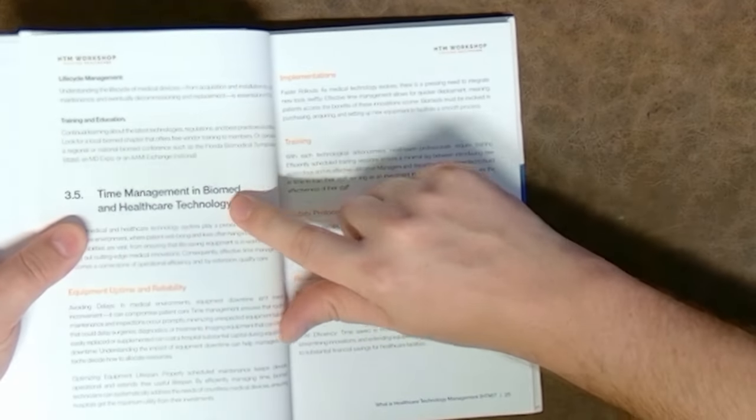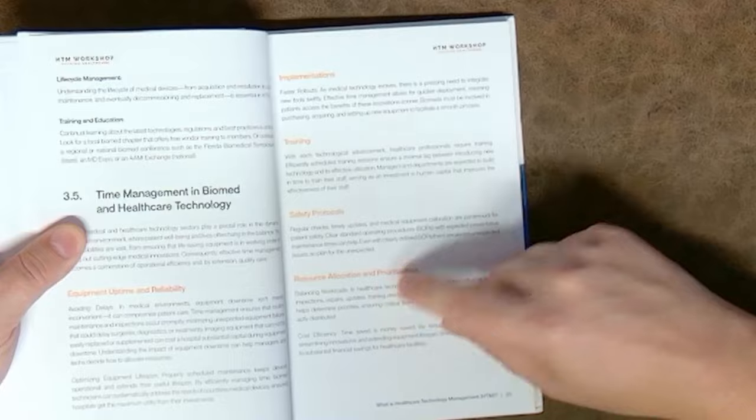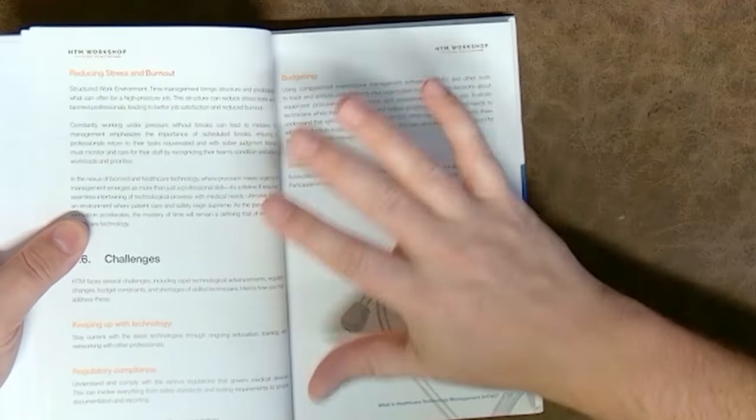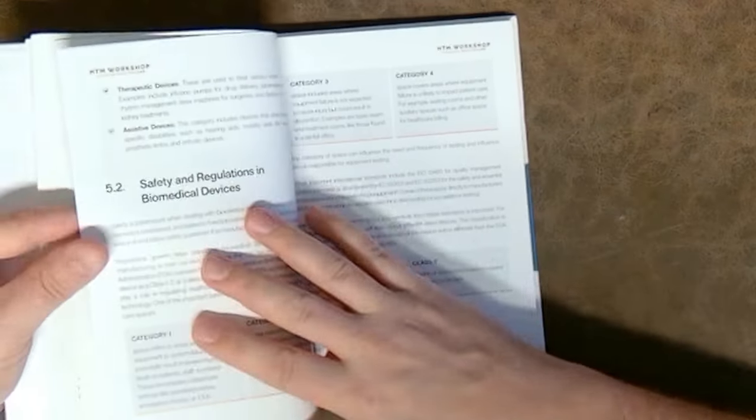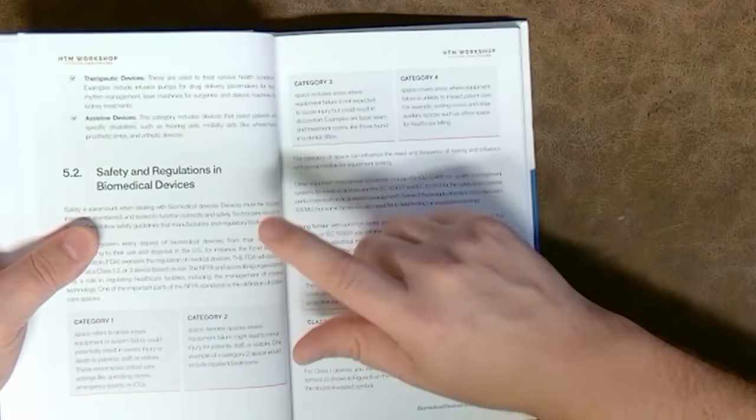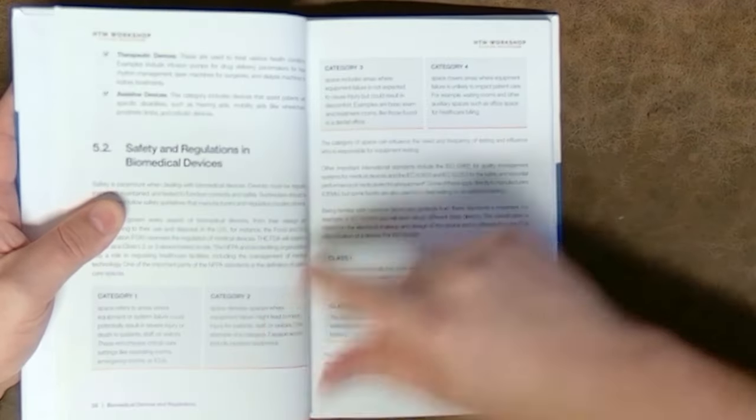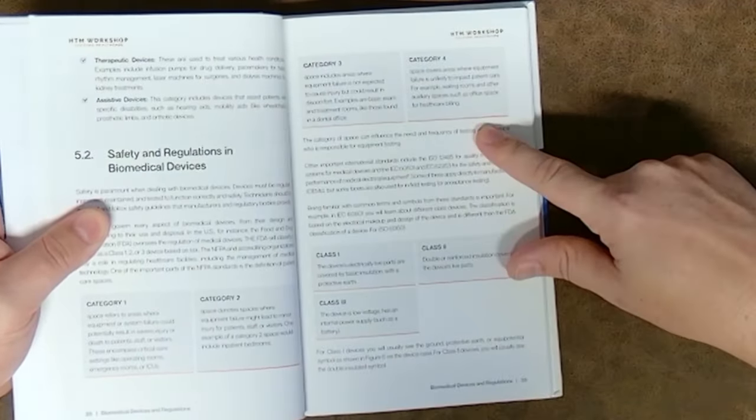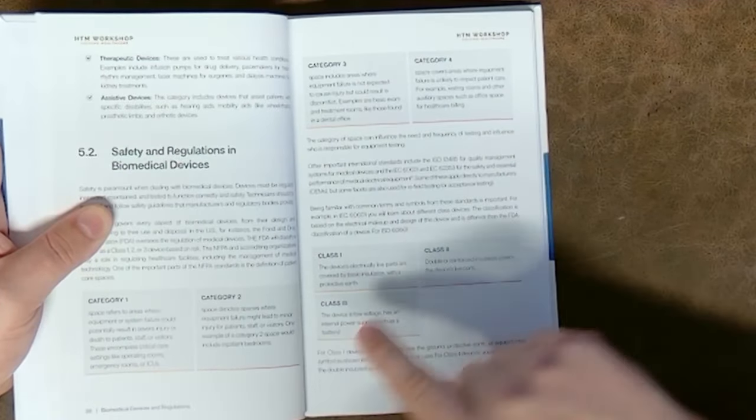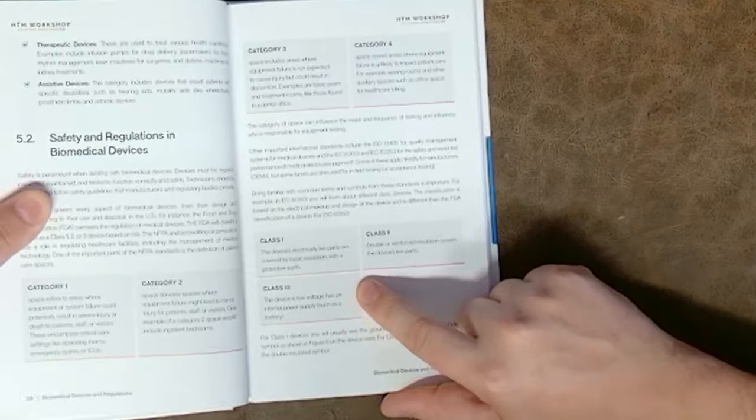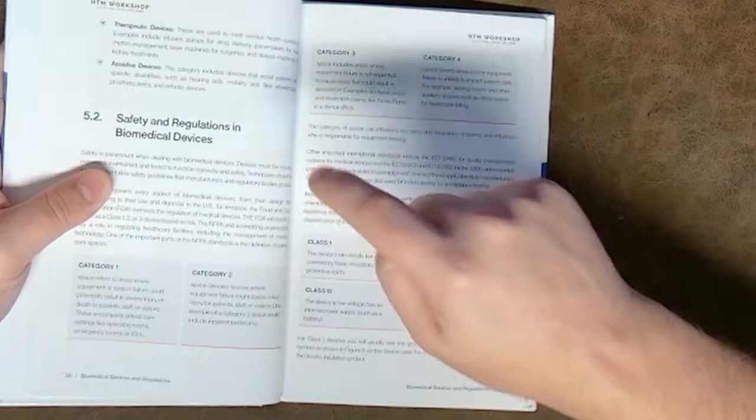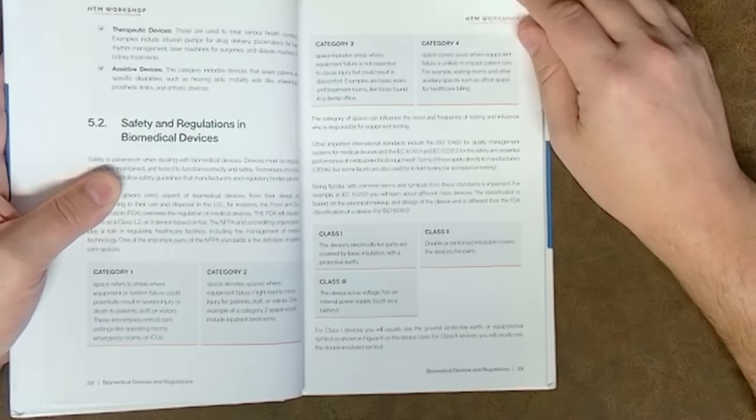Here we have the main category and then you have subsections. Super easy to read. I really wish I would have had this resource before I studied for CBET because this would have made it so much easier. Safety and regulations: Cat 1, Cat 2, Cat 3, and Cat 4. I really like how he's got these all defined, and Class 1 through Class 3. These are really important. Some of you guys that are studying for the CHTM, a lot of that content is going to be found in this book as well.